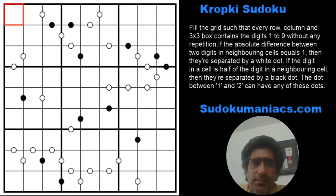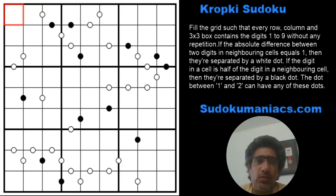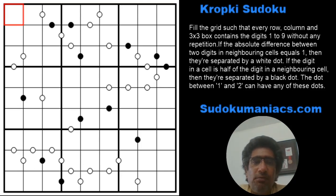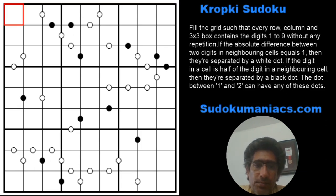Let's have a quick look. You might be aware of the rules — digits just cannot repeat in the row, column, or a 3x3 box. Additionally, if the difference between two adjacent cells is one, those two cells are separated by a white dot. If one digit is half the other digit, they are separated by a black dot, and all possible dots are marked. The relationship between 1 and 2 means adjacent cells can contain either a black or a white dot.